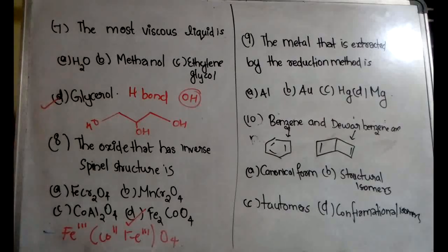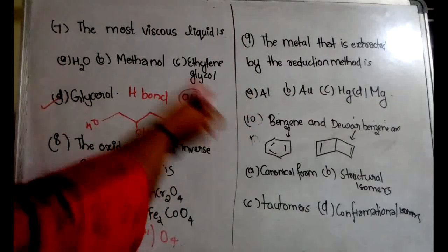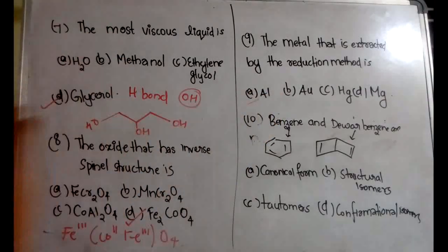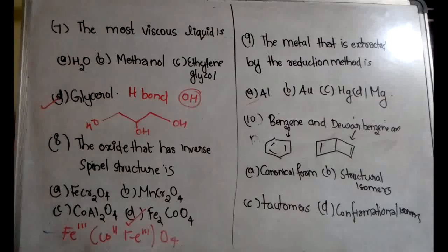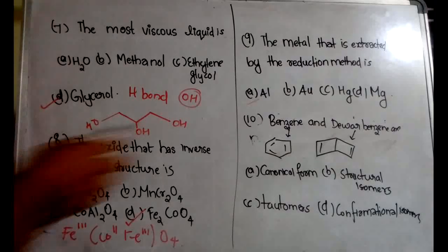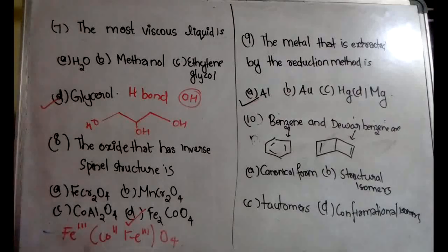The ninth question is from metallurgy. For topics like metallurgy and s-block or p-block chemistry, practicing as many questions as possible is the best approach. The metal extracted by the reduction method is aluminium. Repeated questions often appear from metallurgy, so keep that in mind.